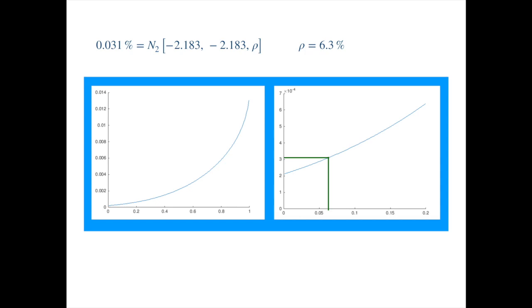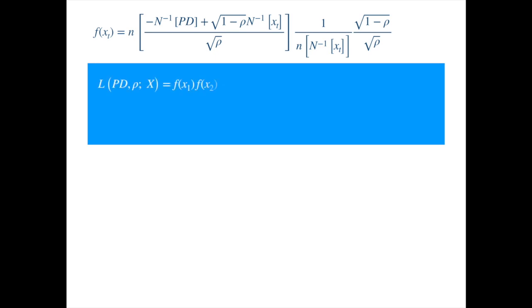Now we move to the maximum likelihood method. The results will come out to be the same as the first approach, though the mathematics is long. We will need the probability density function, which we reproduce here. If we have a sample of T data points, which we assume to be independent, then the probability of observing the sample is just the product of the individual probabilities. Which we can write using the product notation as follows.